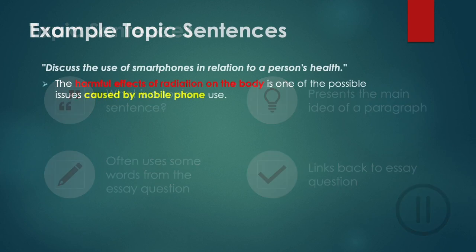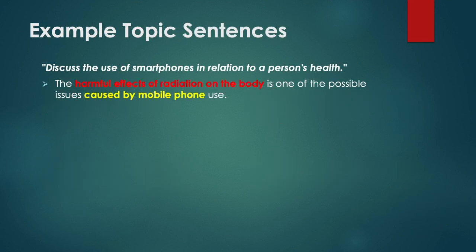Next, some example topic sentences. These examples are from an essay on smartphones. You can see the question at the top — it's a problem-solution essay about smartphones and health. The first topic sentence is from the first body paragraph, with keywords in red and yellow.